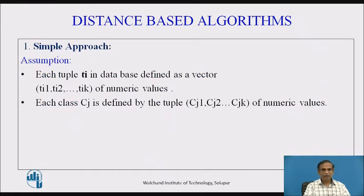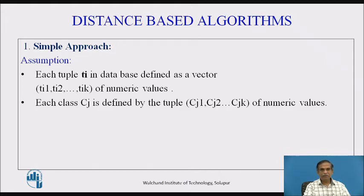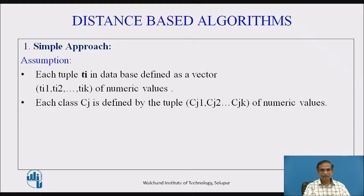First, we will use a very simple approach where we assume that each tuple Ti in the database of consideration is defined as a vector: Ti1, Ti2, up to TiK — all of numeric values. And each class Cj is defined by the tuple consisting of Cj1, Cj2, up to Cjk, also of numeric values.